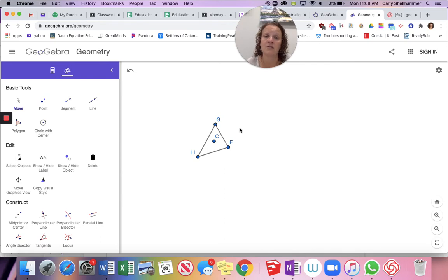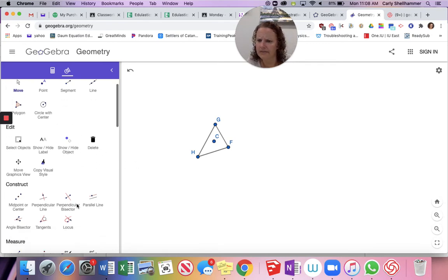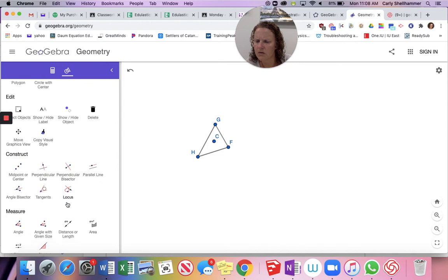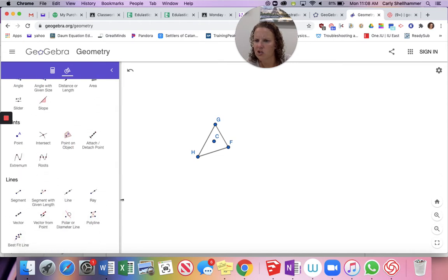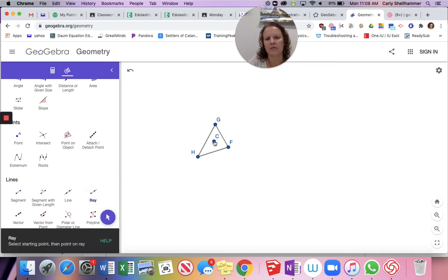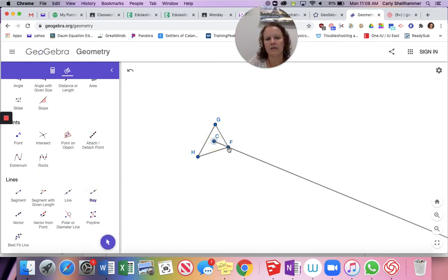We're going to use the circle function instead of the measuring tool. It'll make better sense. It'll just look a little messy. So I've already drawn triangle GHF. Now let's draw some rays. So we're going to draw from C through F, C through H, and C through G.